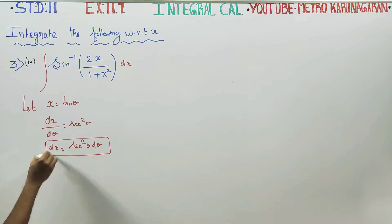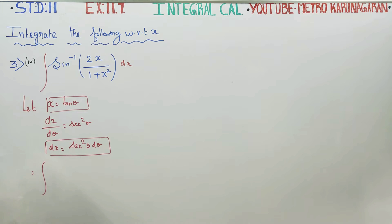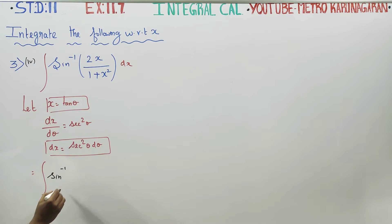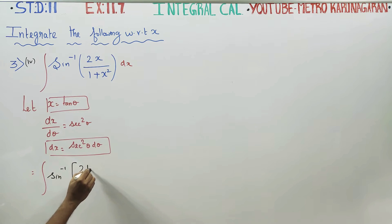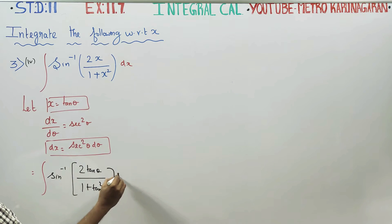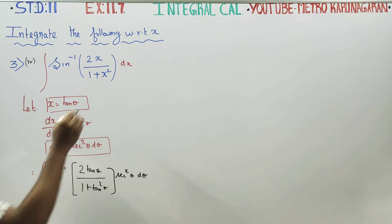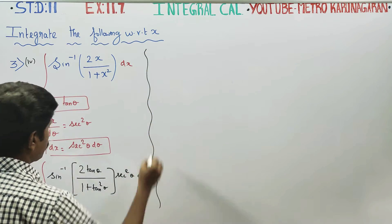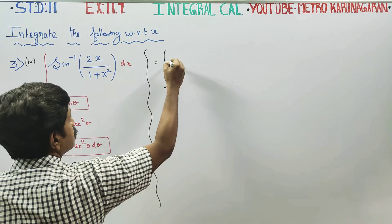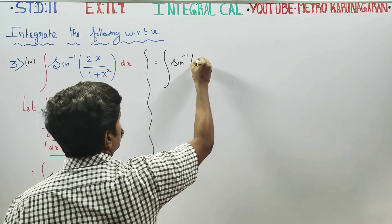Now substitute into the integral. The integration becomes: sin inverse of 2 tan theta by 1 plus tan square theta, and dx is replaced by secant square theta d theta.